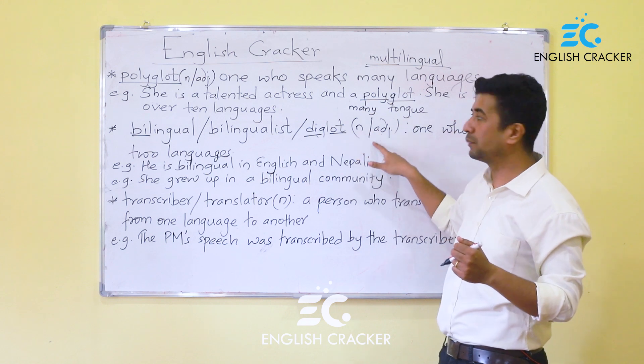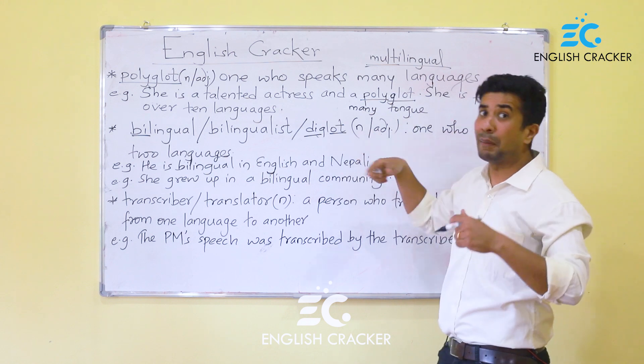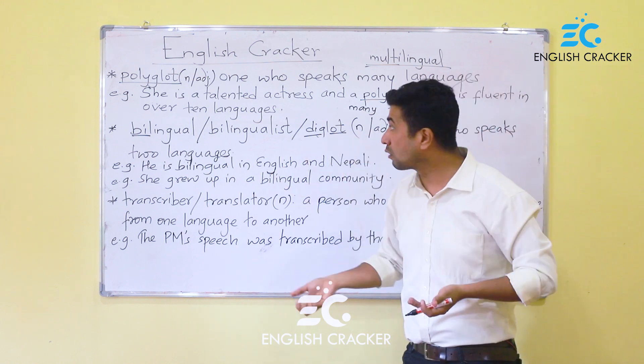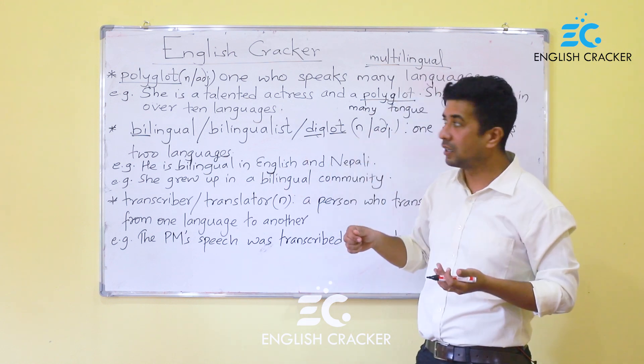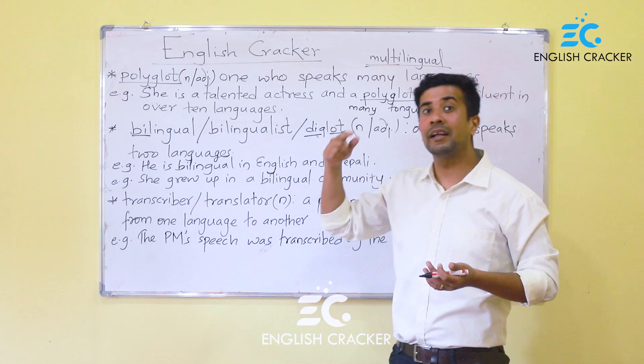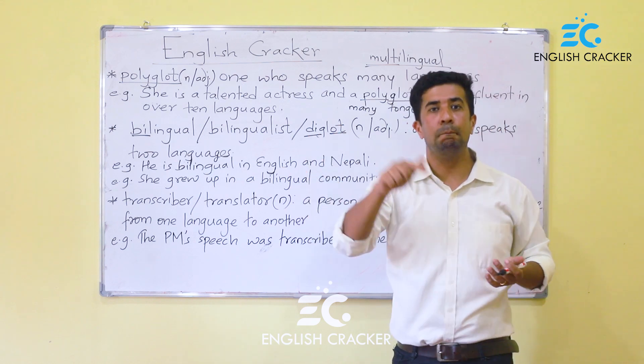Bilingual is both a noun and an adjective. If you know how to use these features: you can say 'he is bilingual' as an adjective, or 'he is a bilingual' as a noun. Similarly, 'he is a bilingual person.'